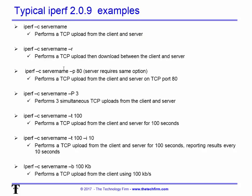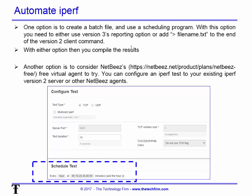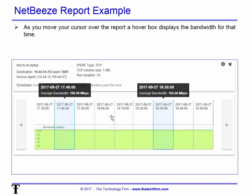Here's a list of typical iPerf commands you might want to look at — I'll put them in the write-up so you can copy and paste easily. If you want to automate iPerf, one way is to put the iPerf command in a batch file with Windows Scheduler or whatever you prefer. Another option is to use NetBees' free virtual agent, which lets you configure iPerf using your existing version 2 server — version 3 is not supported yet.